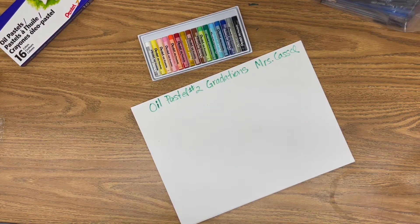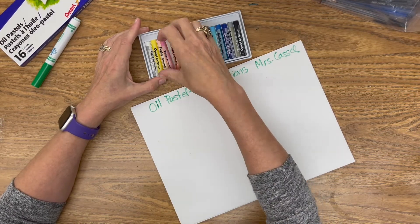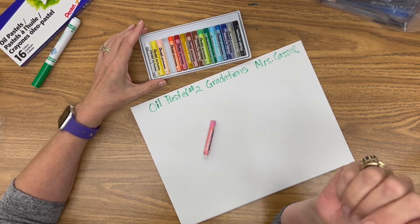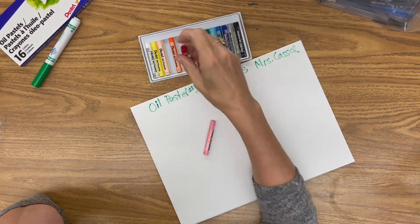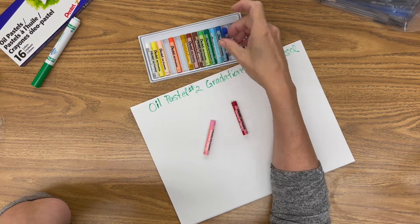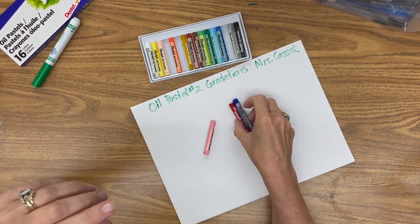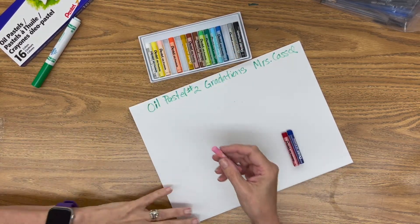And again you are going to need a dark, a medium and a light. So I am going to use the pink for my light, red for my medium and the ultramarine for my dark. You can use black but why not try a color.